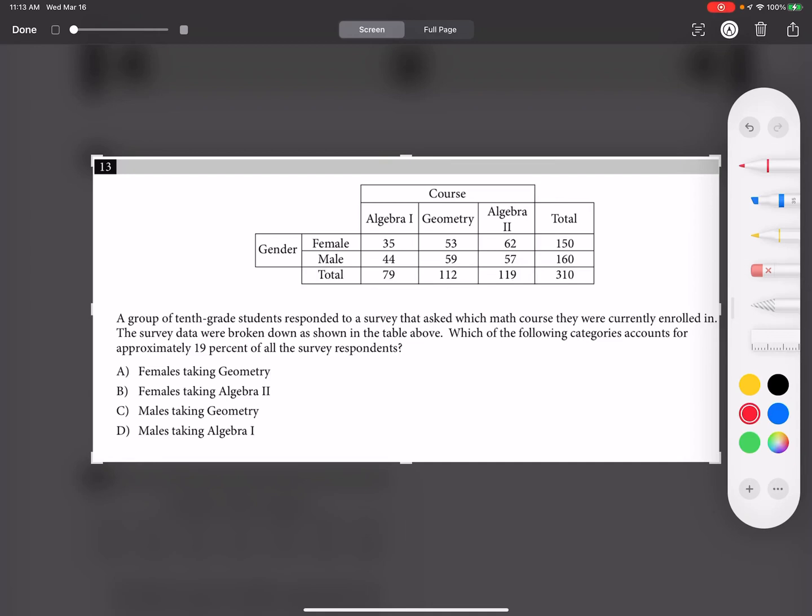A group of tenth grade students responded to a survey that asked which math course they were currently enrolled in. The survey data were broken down as shown in the table above. Which of the following categories accounts for approximately 19% of all the survey respondents?